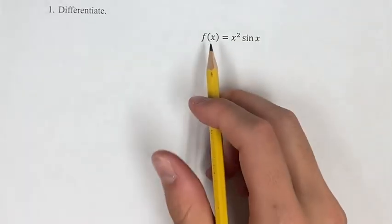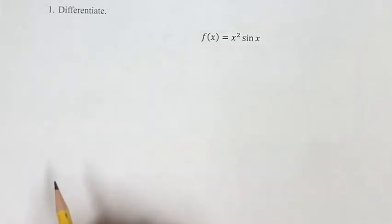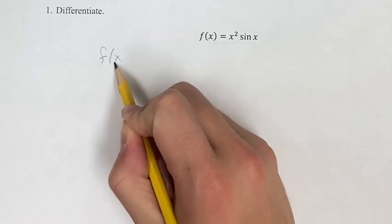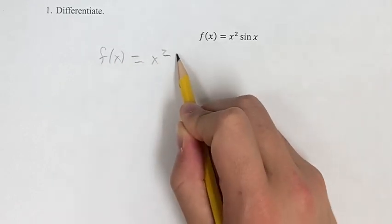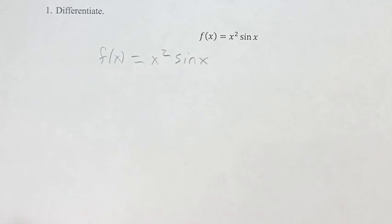In this problem, we're differentiating the function f of x equals x squared times sin x. So what we're going to do to get the derivative of this function is we're going to use the chain rule.